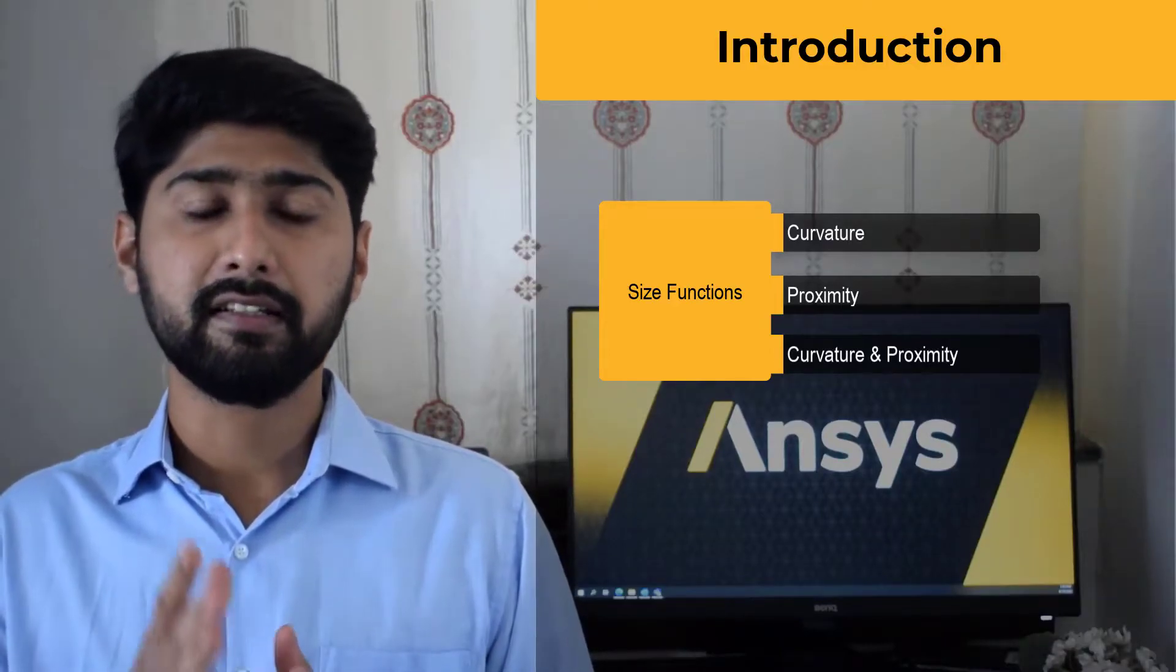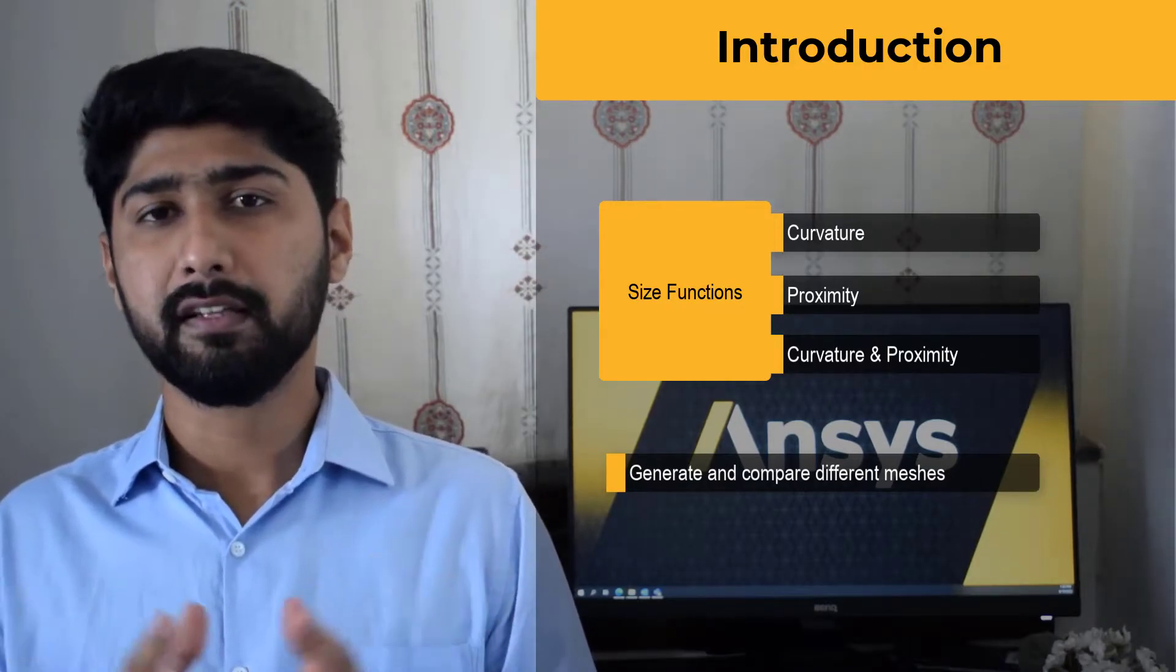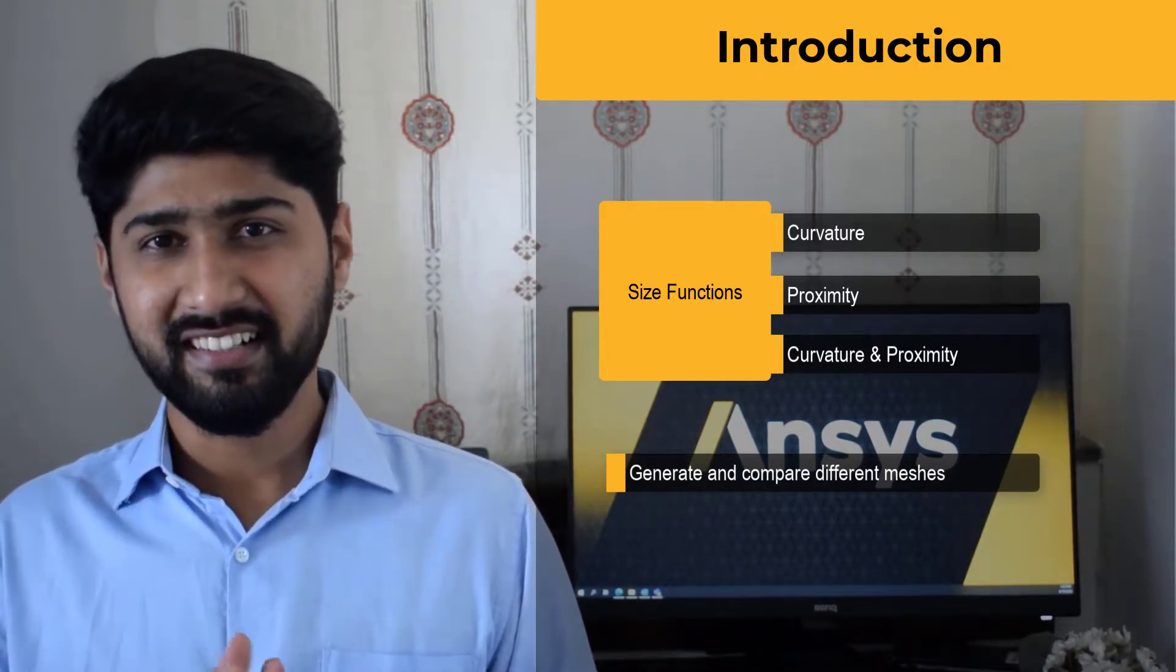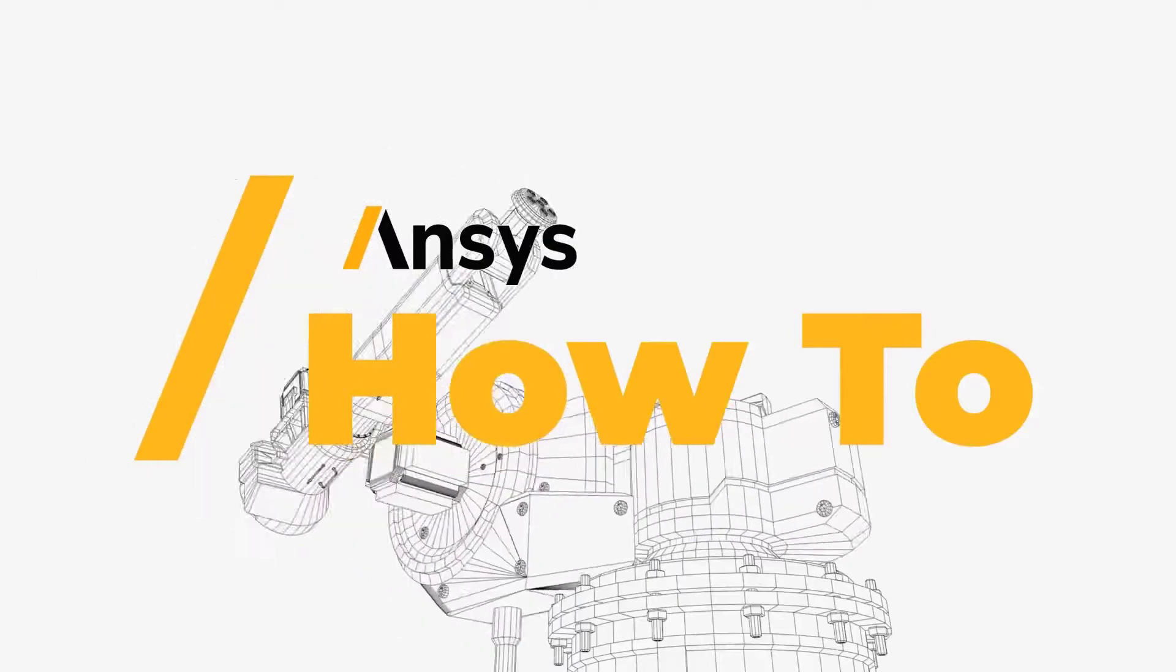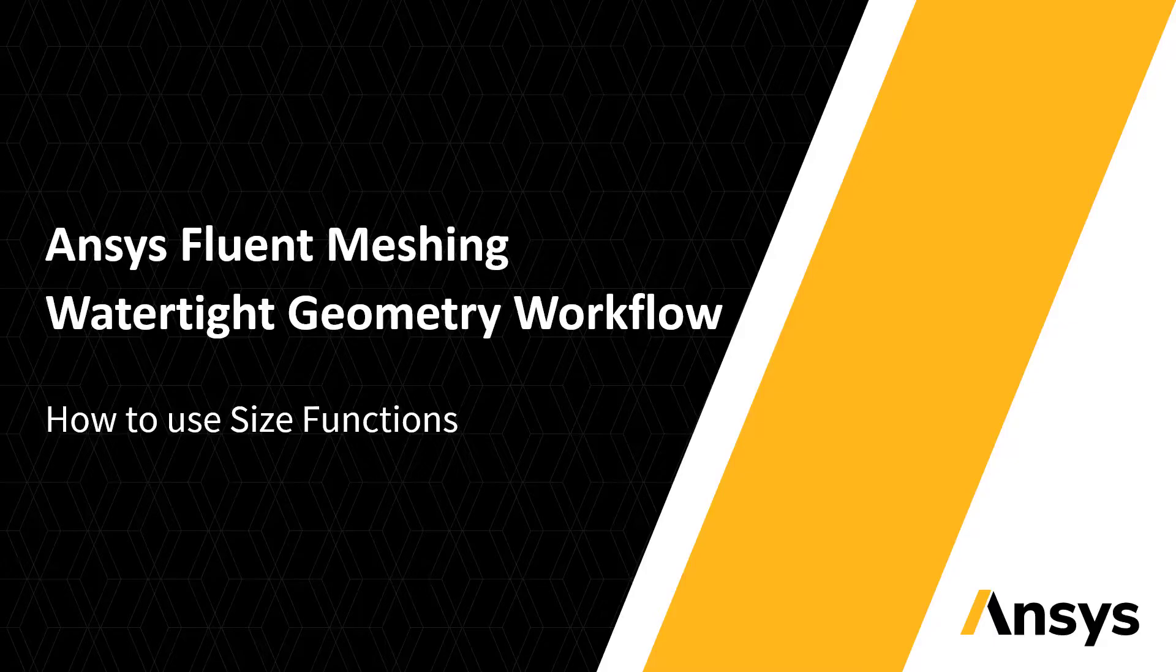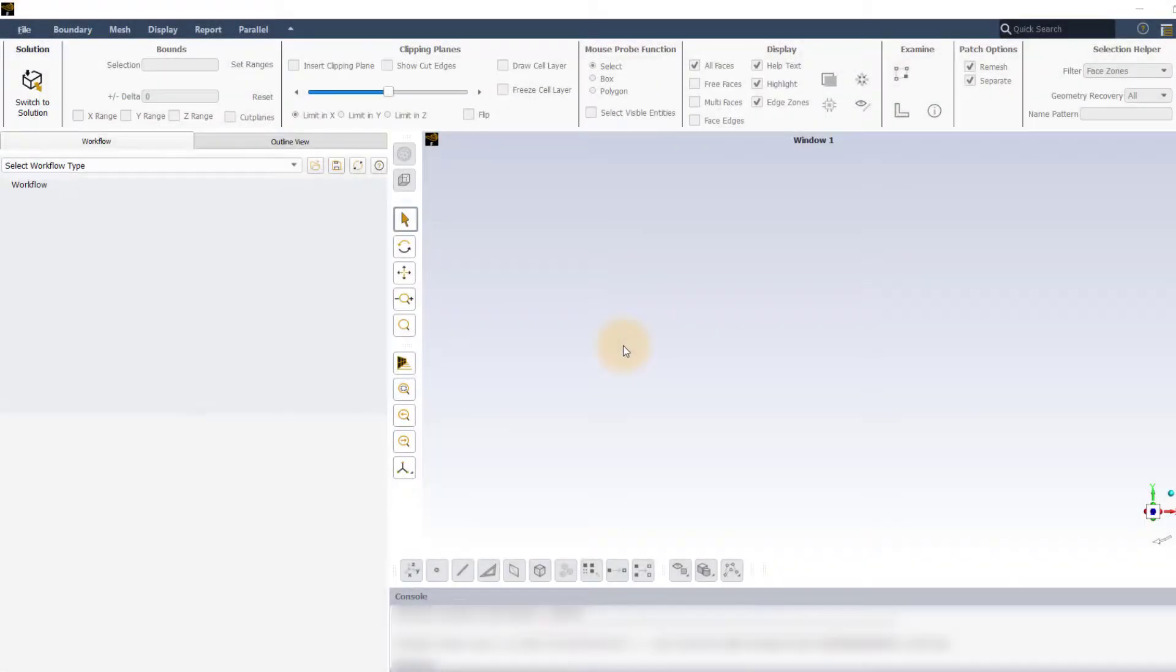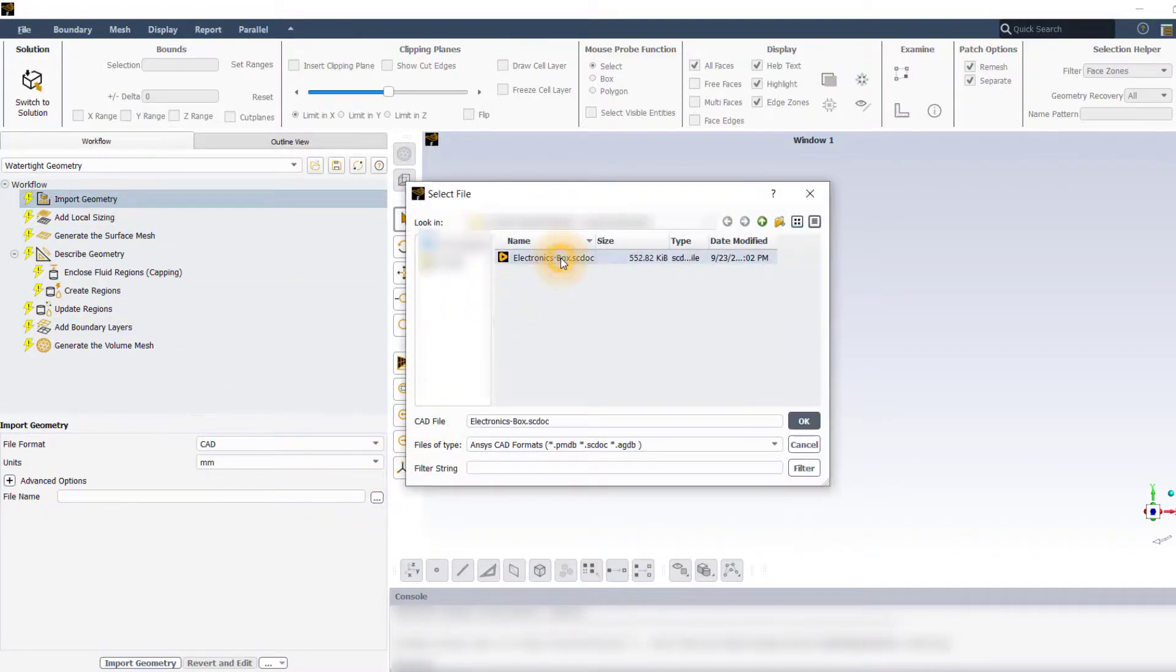To fully understand these options we will generate several surface meshes and compare them with each other. Sounds interesting, right? Let's get started. Let's launch Fluent in meshing mode. Make sure to select the double precision option using the drop down menu. In the workflow tab select the watertight geometry workflow. In the import geometry task keep the options to default and load the provided CAD file.